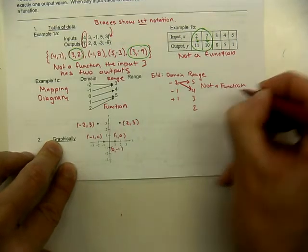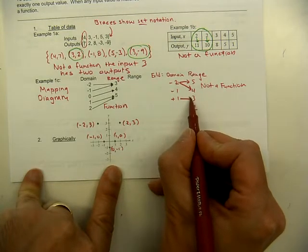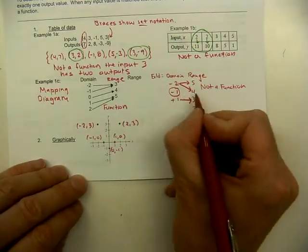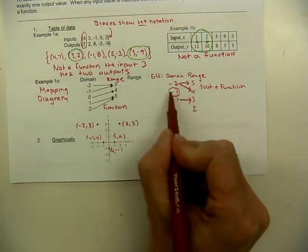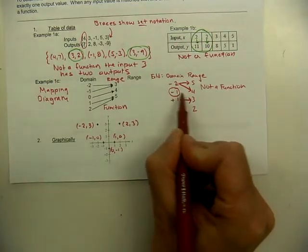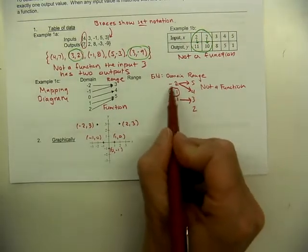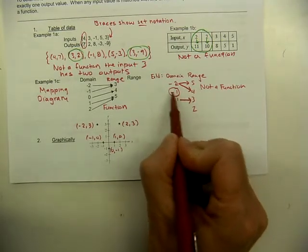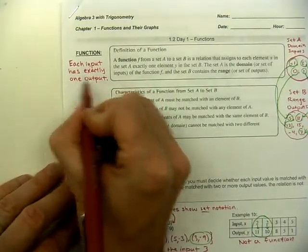There's another issue with mapping diagrams: if I plug in positive 1 and get an answer of 3, but there's no output drawn for another input — like negative 1 has no arrow — that also prevents it from being a function. If I plug in negative 1 and there's no output, that means I'm getting an imaginary number. So each input must be used, and each input has to have exactly one output.